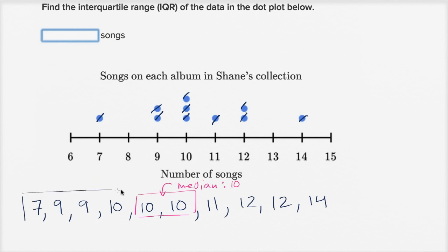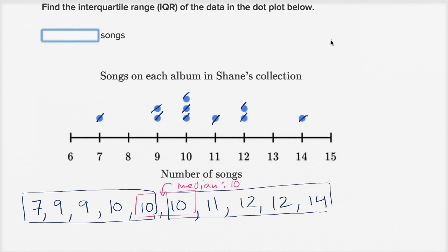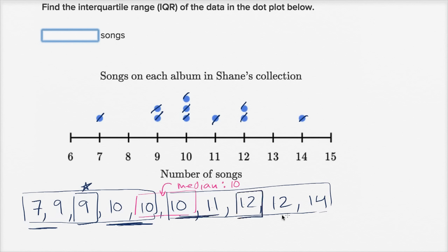In this case where the median was calculated from two middle numbers, I include the left ten in the first half and the right ten in the second half — five numbers each. The median of the first half is nine, with two to the left and two to the right. The median of the second half is twelve, right in the middle with two to the left and two to the right. The interquartile range is twelve minus nine, which equals three.